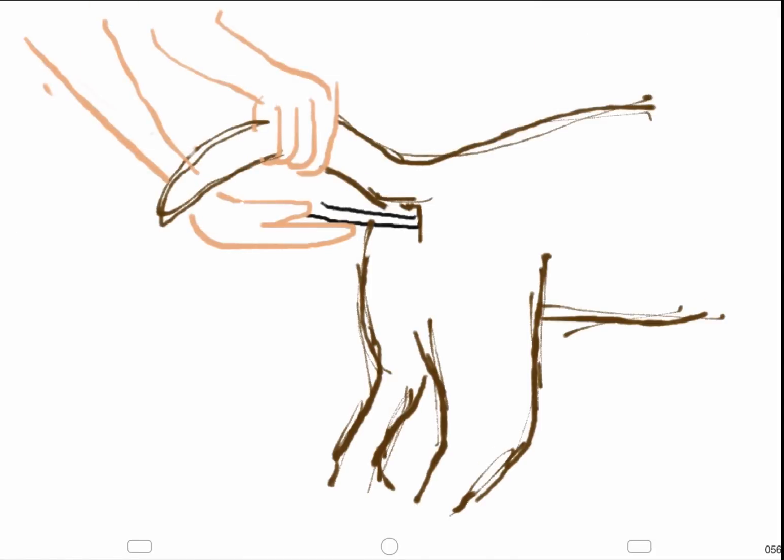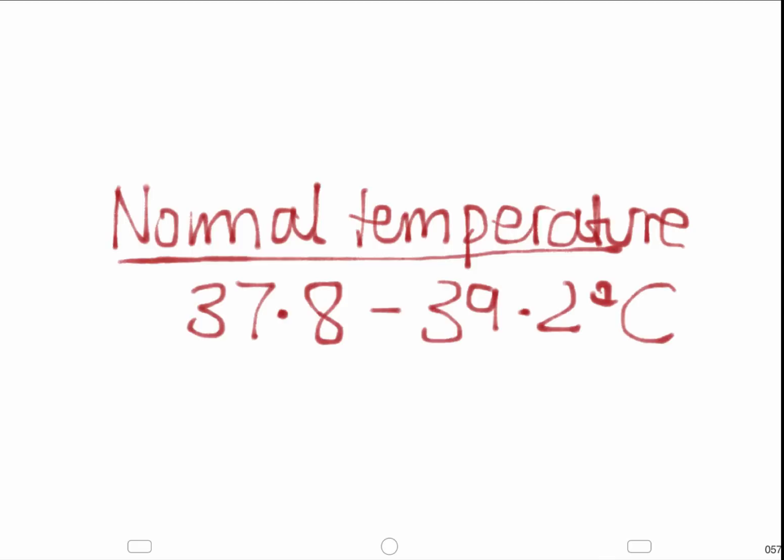The temperature should be taken by placing the tip of the thermometer in the anus up against the rectal wall. The normal temperature for a dog is 37.8 to 39.2 degrees Celsius.